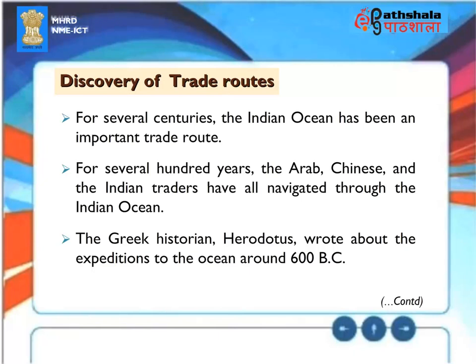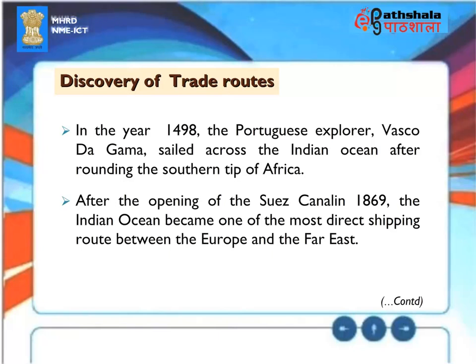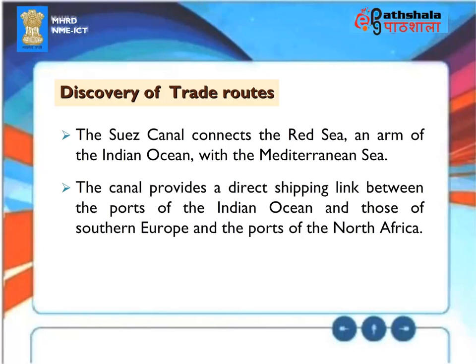Discovery of Trade Routes. For several centuries the Indian Ocean has been an important trade route. For several hundred years the Arab, Chinese and the Indian traders have all navigated through the Indian Ocean. The Greek historian Herodotus wrote about the expeditions to the ocean around 600 BC. In the year 1498 the Portuguese explorer Vasco da Gama sailed across the Indian Ocean after rounding the southern tip of Africa. After the opening of the Suez Canal in 1869, the Indian Ocean became one of the most direct shipping routes between Europe and the Far East. The Suez Canal connects the Red Sea, an arm of the Indian Ocean, with the Mediterranean Sea, providing a direct shipping link between the ports of the Indian Ocean and those of southern Europe and the ports of North Africa.